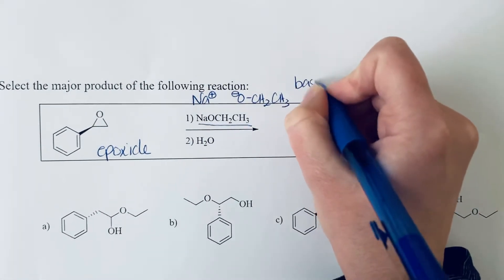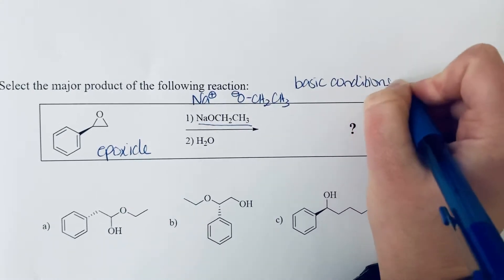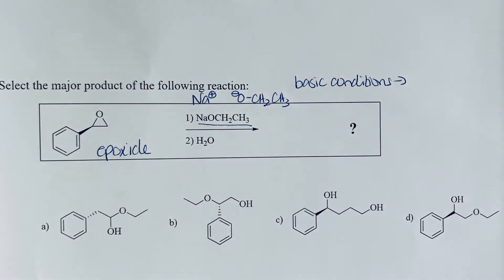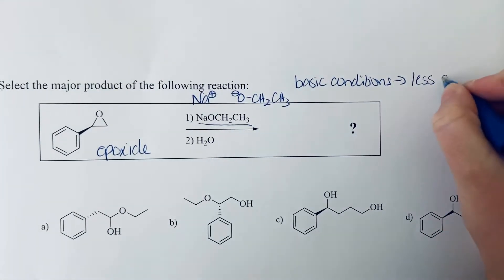Under basic conditions, the ring opening of the epoxide takes place at the less substituted carbon of the epoxide.